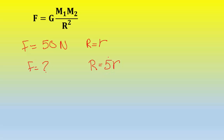Take the inverse of the factor 5, which is 1/5, then square it — inverse then square. So the force will become (1/5)² times the original force. The original value of f1 was 50 Newtons, so f2 equals (1/5)² times f1.